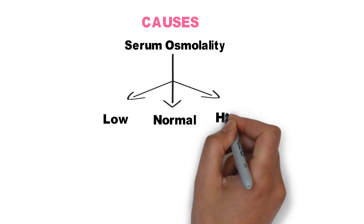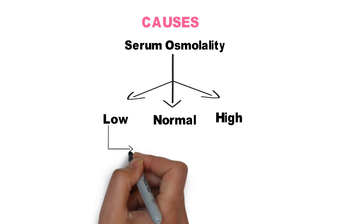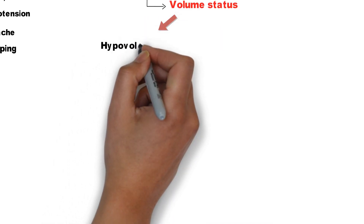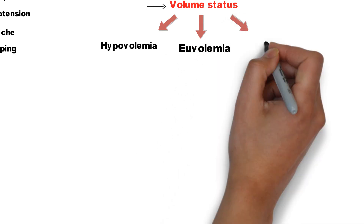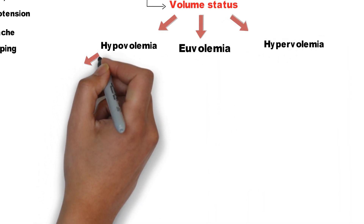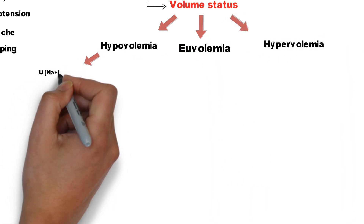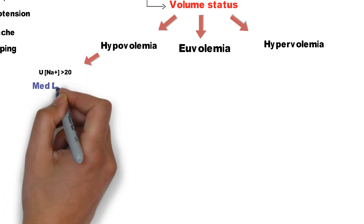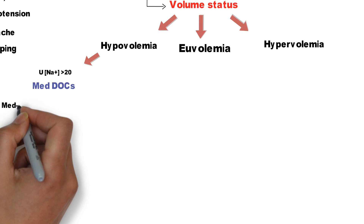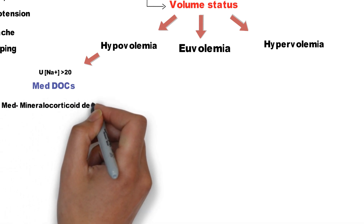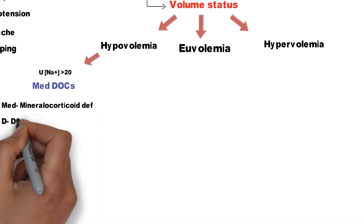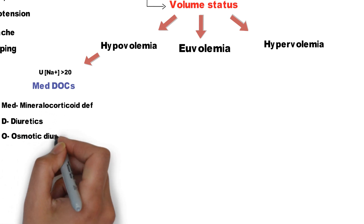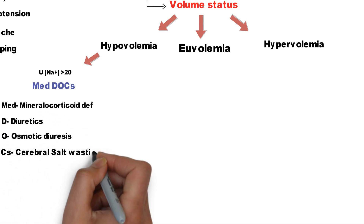Low osmolality is further categorized by volume status into hypovolemia, euvolemia, and hypervolemia. In hypovolemia, if urinary sodium is more than 20 mEq/L, remember the causes by the mnemonic MEDDOCS: MED for mineralocorticoid deficiency, D for diuretics, O for osmotic diuresis, and CS for cerebral salt wasting.